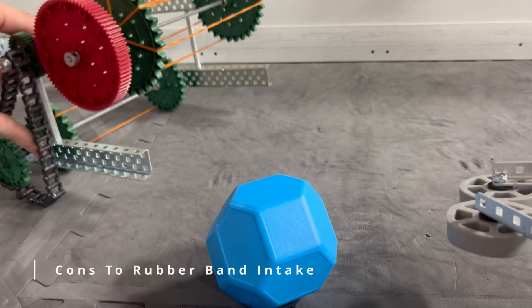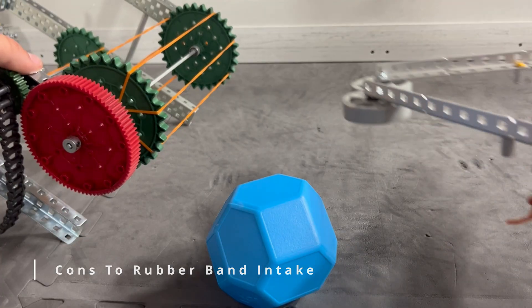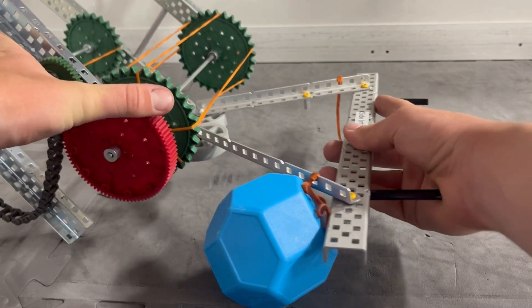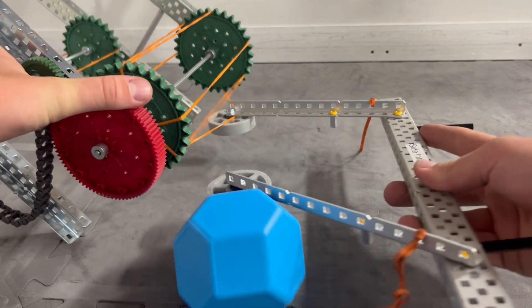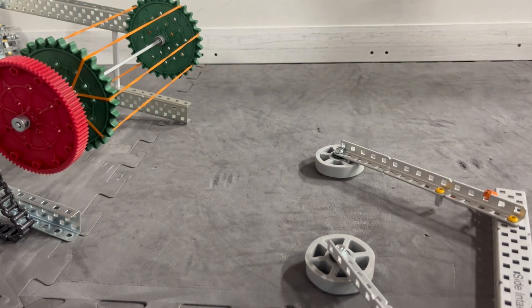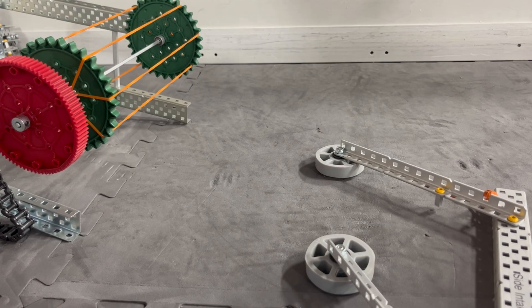The downside of a rubber band intake that I think you should be aware of is if your team has a side intake, it can be very easy to get some sort of entanglement call where you end up like this and now you're stuck for the match or your intake ends up breaking. So I'd definitely be aware of that.